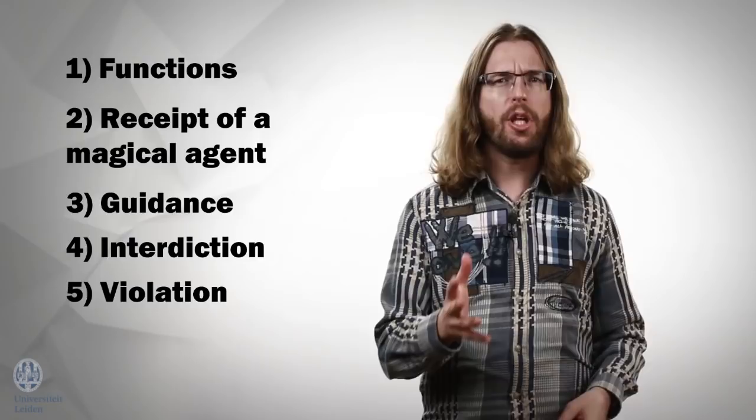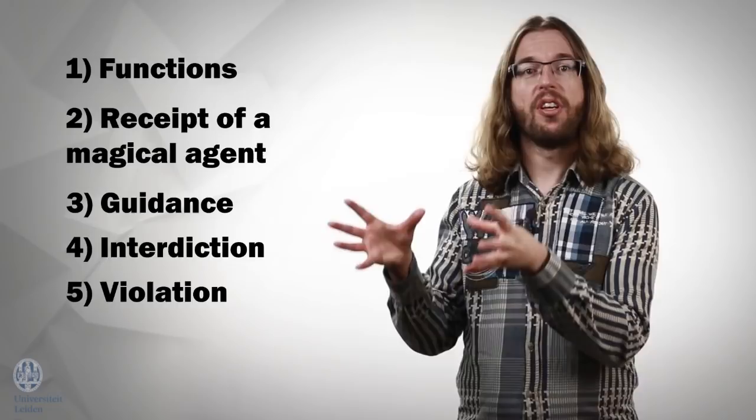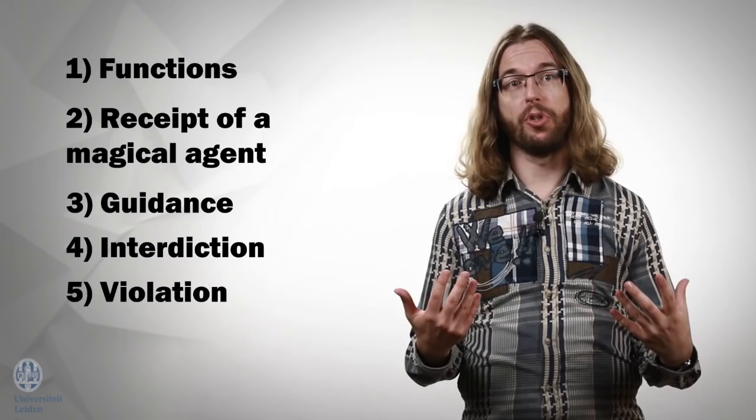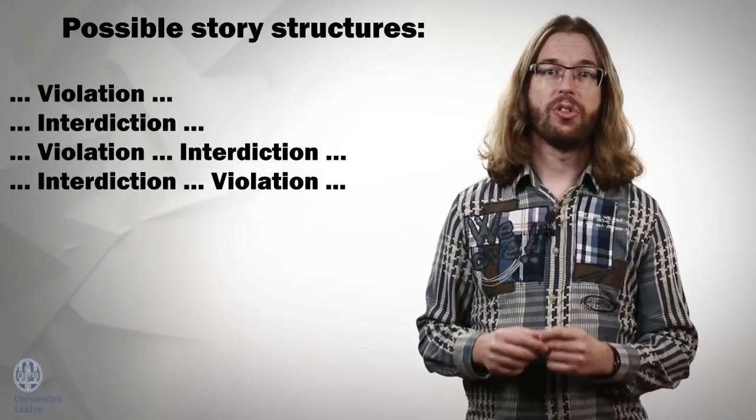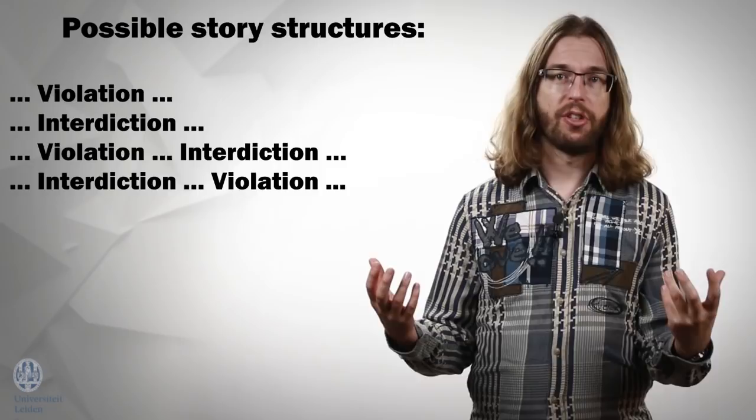Violation, on the other hand, is a scene in which the interdiction is violated. The hero does stray from the path, or he does fall asleep in the boat. So what combinations of violation and interdiction are possible? Propp points out that first, if you have violation, you also must have interdiction. That's pretty obvious. You can't violate an interdiction if there is no interdiction to violate.